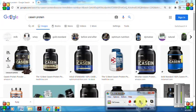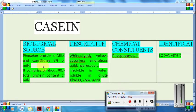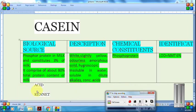Next is casein protein. It is a protein obtained from milk. For biological source: it is the principal phosphoprotein in milk and constitutes about 3% of milk. It comprises about 80% of the total protein content of milk. These are of two types: acid casein and rennet casein. These are the two forms.